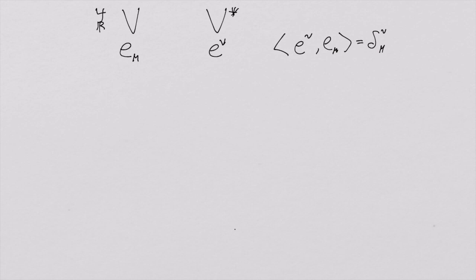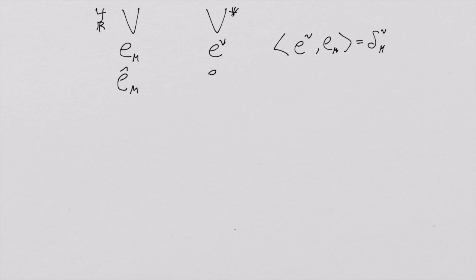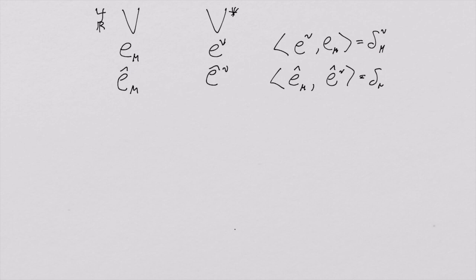Now we're going to talk about a second basis. I'm going to create this second basis and call it E-hat, specifically Ê_μ. Likewise, its dual is going to be Ê^ν. The E-hat basis will have its dual basis, which is defined through the same delta function rule.